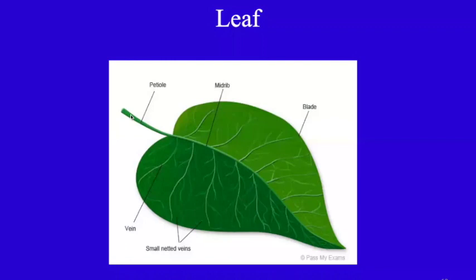The leaf has two parts: the blade and the petiole. The blade, also called the lamina, is the main place of photosynthesis. It has a midrib, which is further divided into veins, and these veins are divided into small netted veins. The petiole is a stem-like part of the leaf that joins the blade to the stem. The petiole has tiny tubes that connect with veins in the blade.